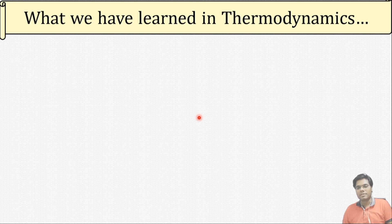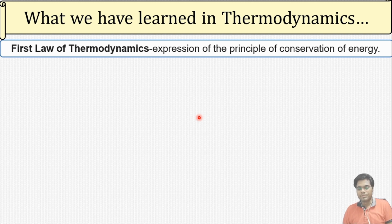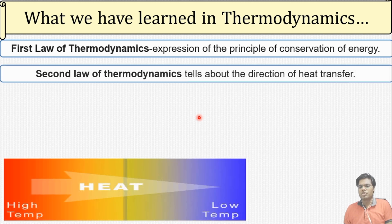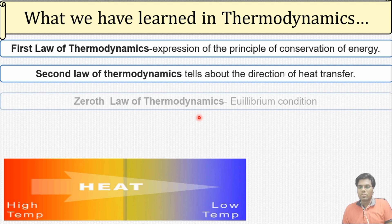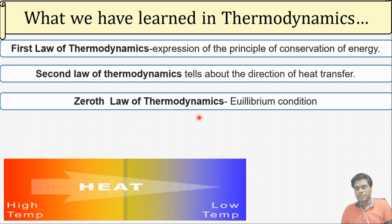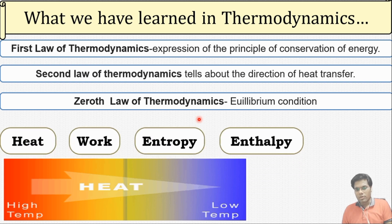In our thermodynamics subject, we learned the first law of thermodynamics, which is the expression of the principle of conservation of energy — that energy can neither be created nor destroyed, but can only be converted from one form to another. The second law tells about the direction of heat transfer: heat can only transfer from a higher temperature system to a lower temperature system whenever there is a temperature difference. The zeroth law tells about equilibrium conditions between systems. We also learned terms like entropy, enthalpy, and energy in the form of heat and work.